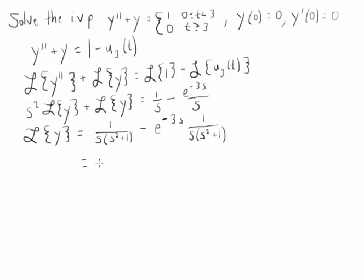So what we're going to get is 1 over s minus s over s squared plus 1 minus e to the negative 3s times 1 over s minus s over s squared plus 1. If you're wondering where did I get that, I got that from Maple.